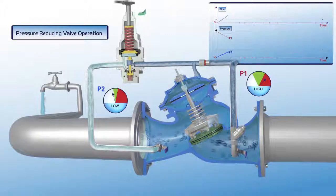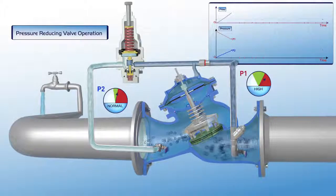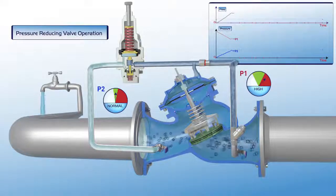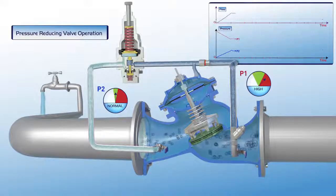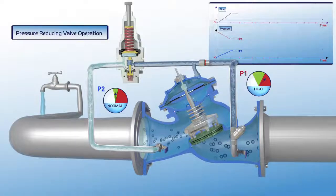The downstream pressure stabilizes at the P2 gauge green zone. As shown on the chart, flow through the valve at this stage is constant, and the P1 upstream pressure is reduced to the required green zone settings of the P2 downstream pressure gauge.